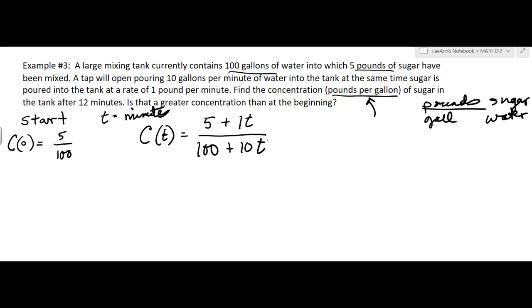This is a rational expression — a polynomial in the numerator and a polynomial in the denominator. It's not a very fancy one, but notice that both the numerator and the denominator are linear. That would be our function for concentration: C(t) = (5 + t) / (100 + 10t).